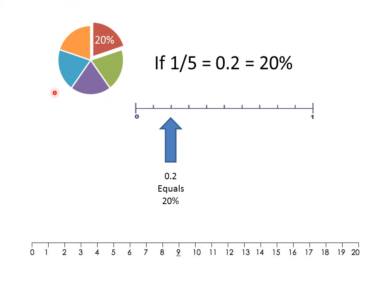Here we have a pie chart with five equal pieces. This piece is one-fifth of the pie. We know that one-fifth equals 0.2, and that equals twenty percent. All of these numbers are equal. And these are numbers — one-fifth is a number, zero point two is a number, twenty percent is a number. We can represent these numbers on the number line.